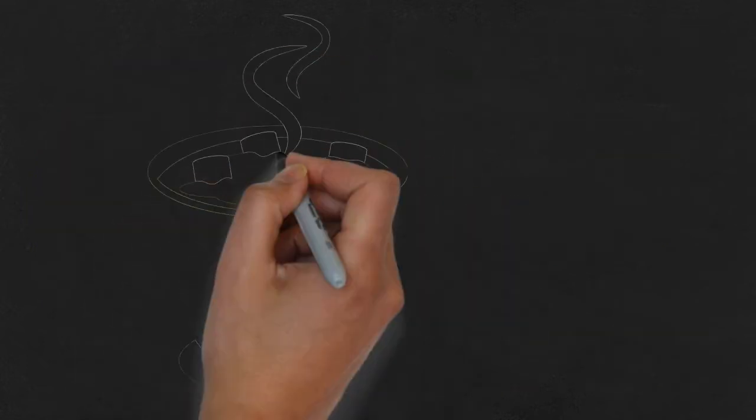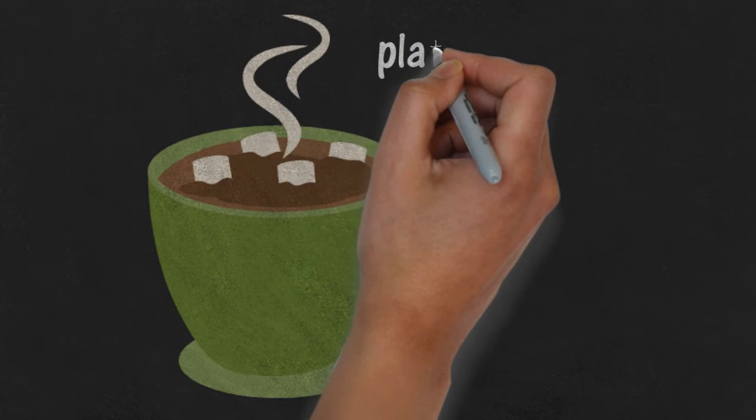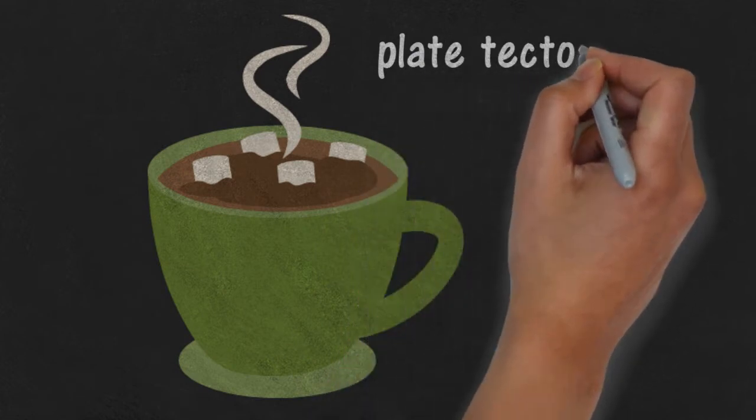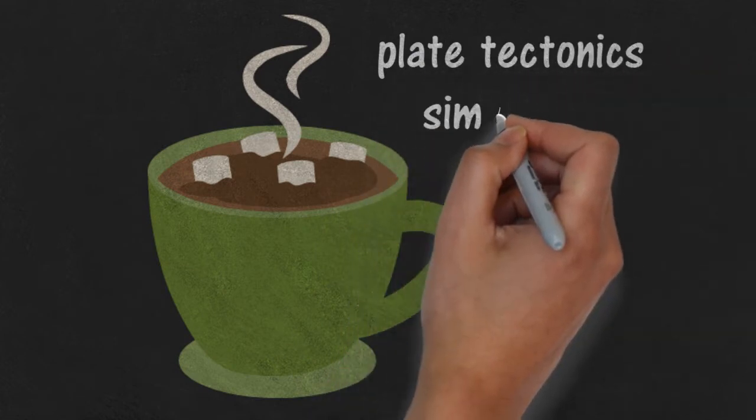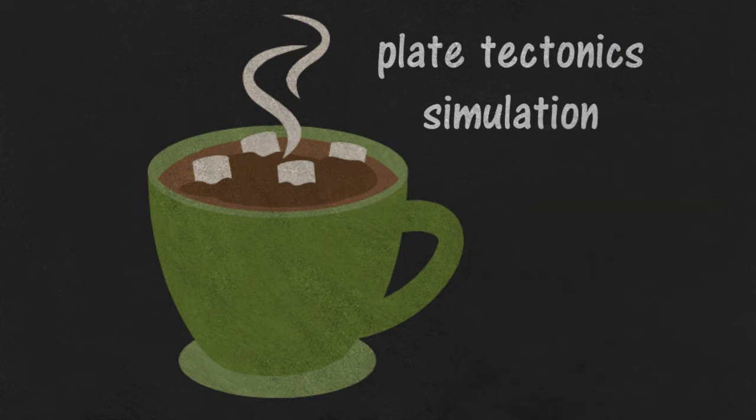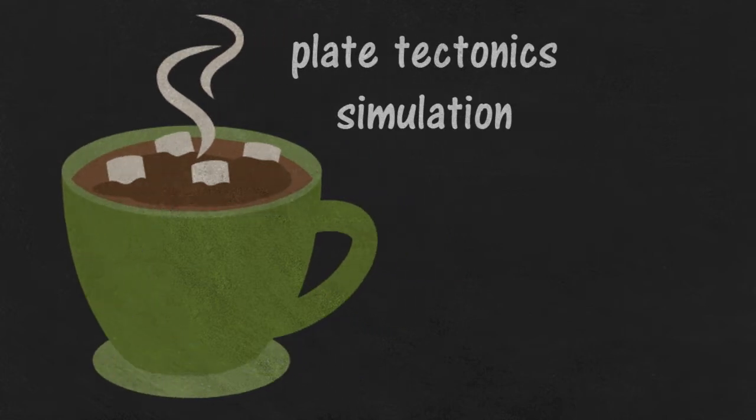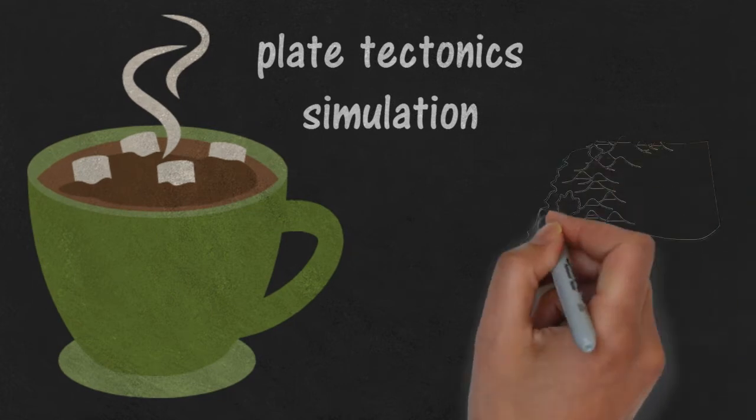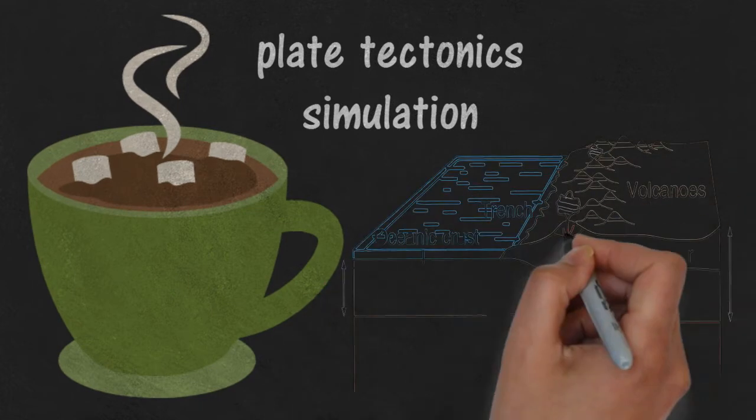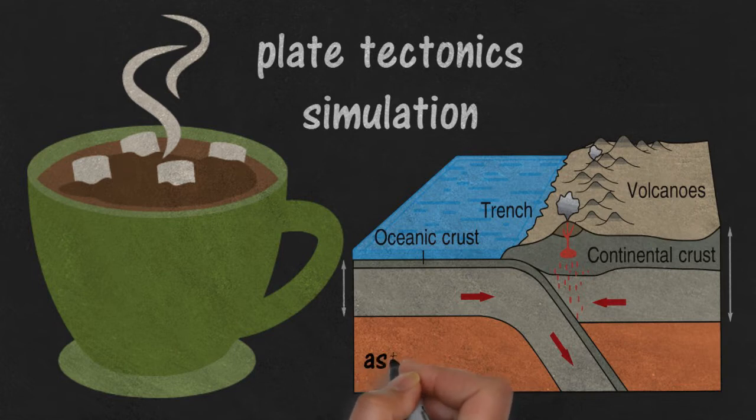If you've ever made hot cocoa, then you saw a good simulation of plate tectonics, but probably weren't aware of it. When the cocoa powder was added to the vigorously boiling milk, but not yet stirred in, it floated around with the convection current in the heated milk. In a similar fashion, the Earth's plates, lying on top of the flowing asthenosphere, move as the asthenosphere moves because of convection currents.